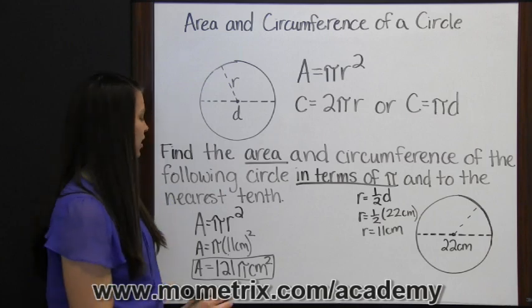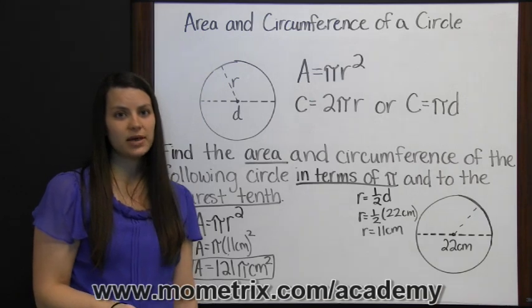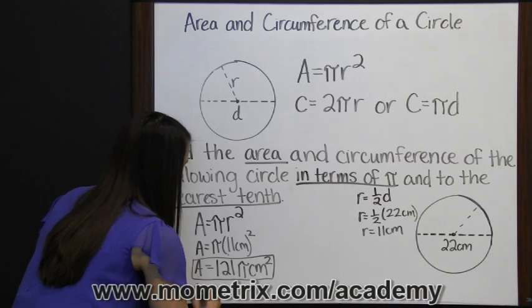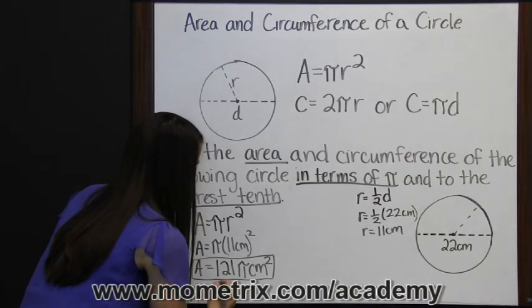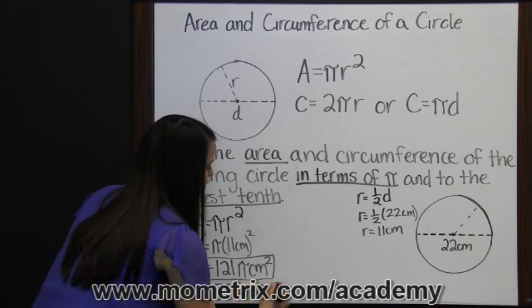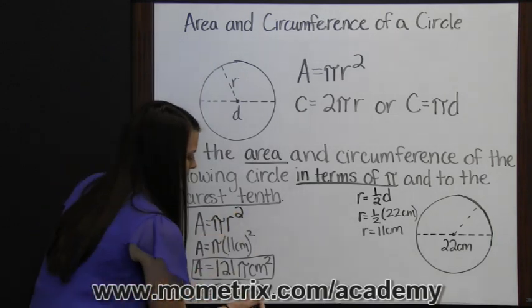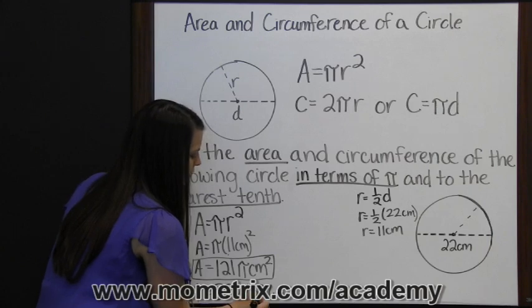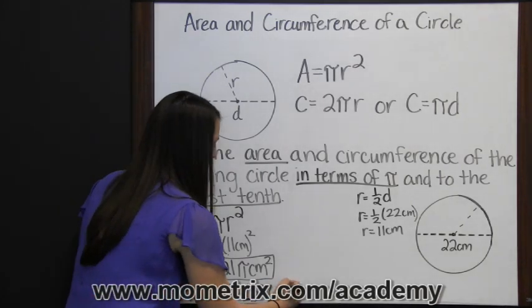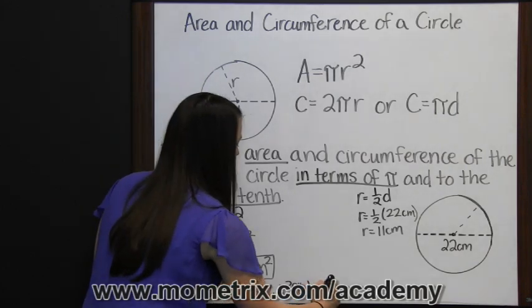The second way they asked us to find area was rounded to the nearest tenth. So now we do need to multiply times pi, and when you multiply 121 times pi, you get that the area is about 380.1327. Since they asked us to round to the tenths place, the one is in the tenths place, but the three tells the one to stay the same, so that would be 380.1 centimeters squared.